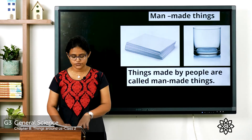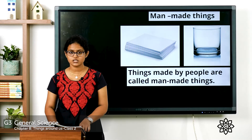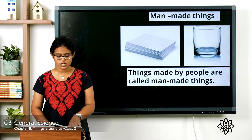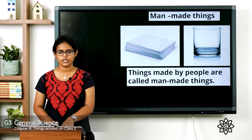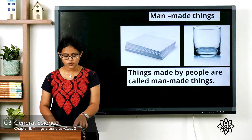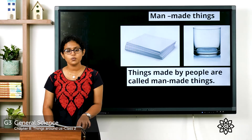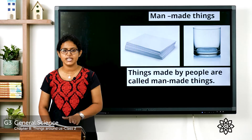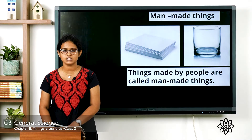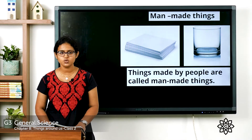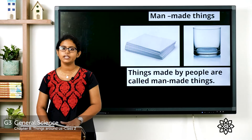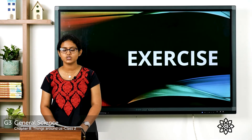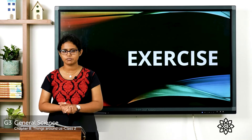Page number 84 again has a question: name the natural materials used to make the following things. You have to write the names of the natural materials used to make each of the things listed. Now let's go on to the exercises of this chapter.